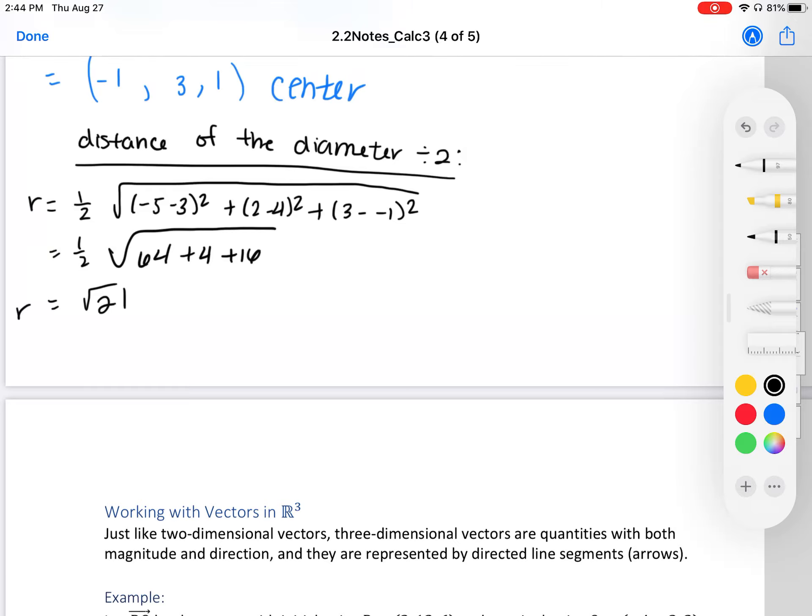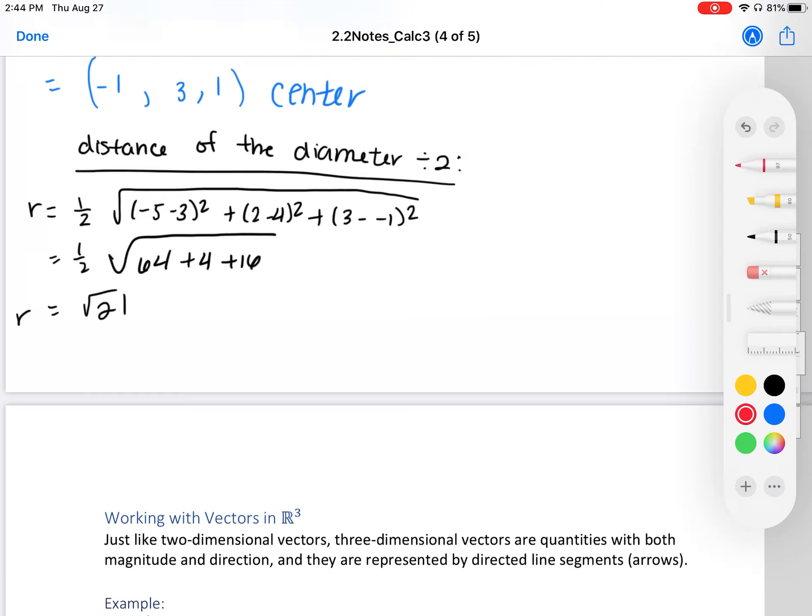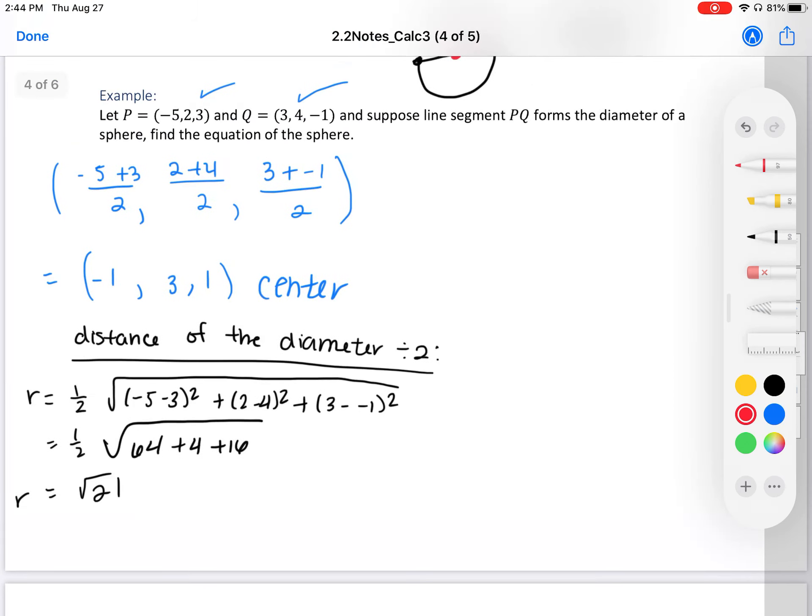Our formula, our answer we want: we need the center. So I have (x + 1)², (y - 3)², and (z - 1)² = 21. And then we found our equation of the sphere.